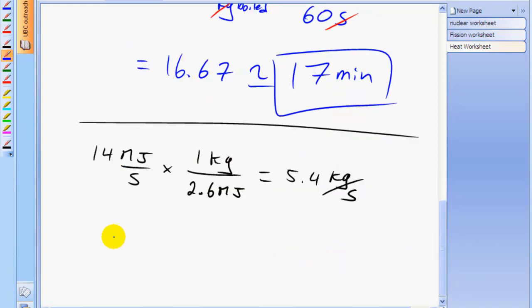And turning this into tons per minute, we have 1000 kilograms for every metric ton, and we'll times that by 1 second for every 5.4 kilograms in order to cancel away the kilograms, leaving us with seconds. And we'll convert those seconds into minutes by multiplying by 1 minute for every 60 seconds. And this gives us 3.1 minutes.